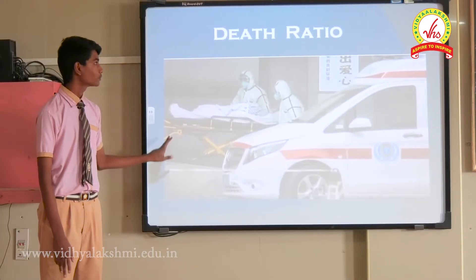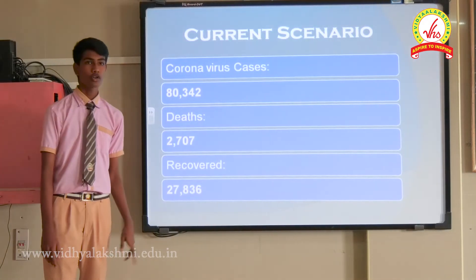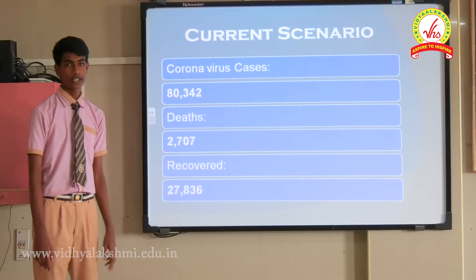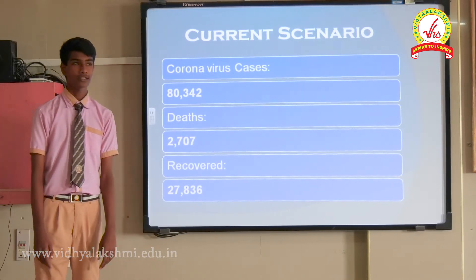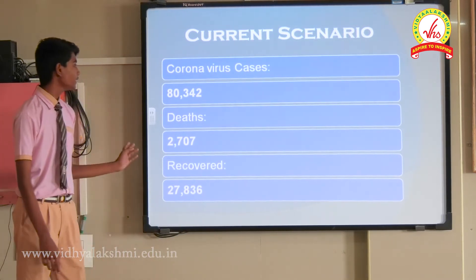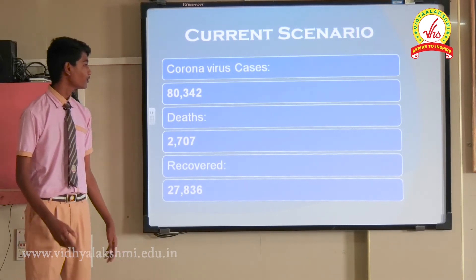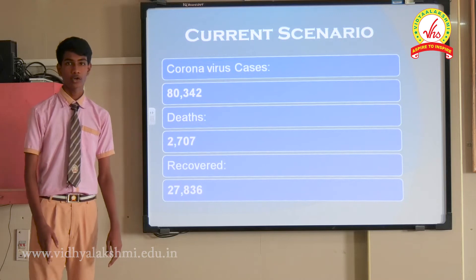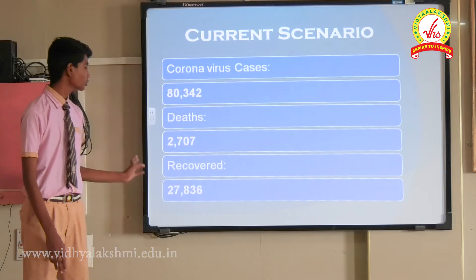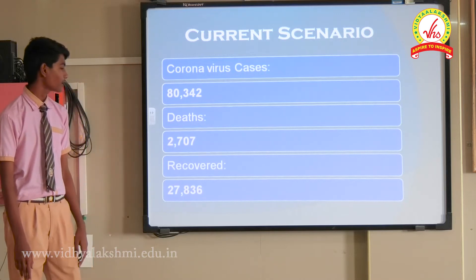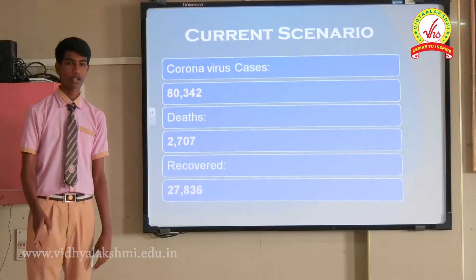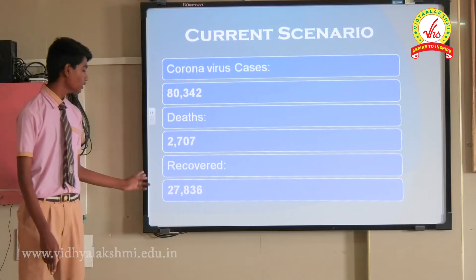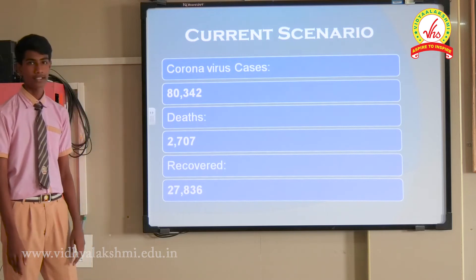Death ratio and current scenario: The total number of cases are 80,342. The total deaths are 2,707. The total number of recoveries from coronavirus are 27,836.